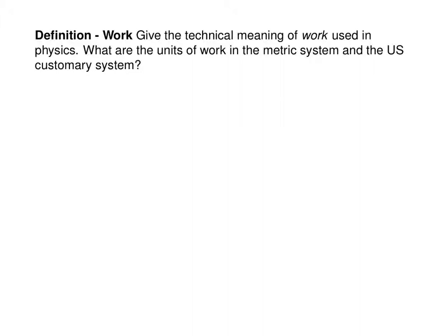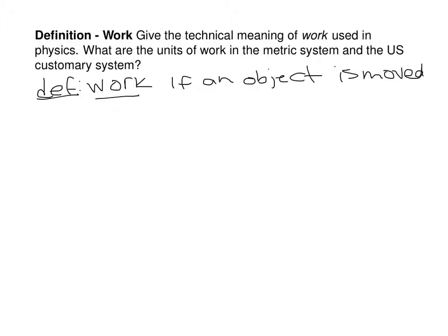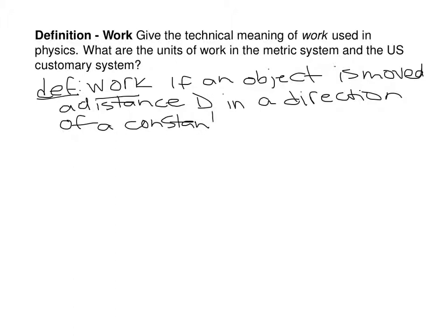What are the units of work in the metric system and the US customary system? The general definition is this: if an object is moved a distance d in the direction of a constant force F, then work, which we will call capital W, is equal to force times distance.